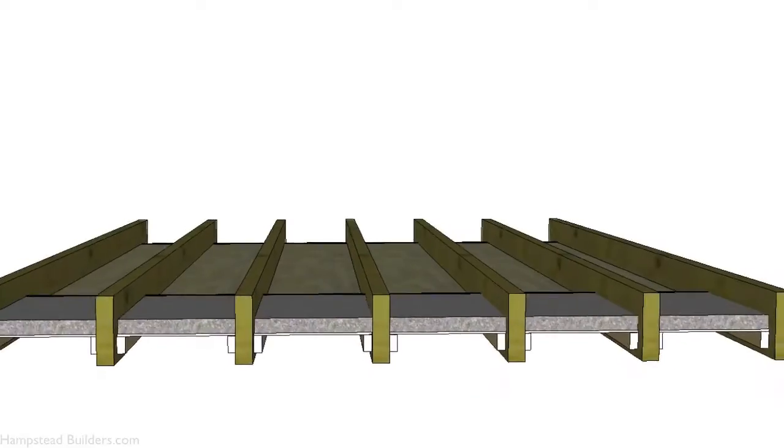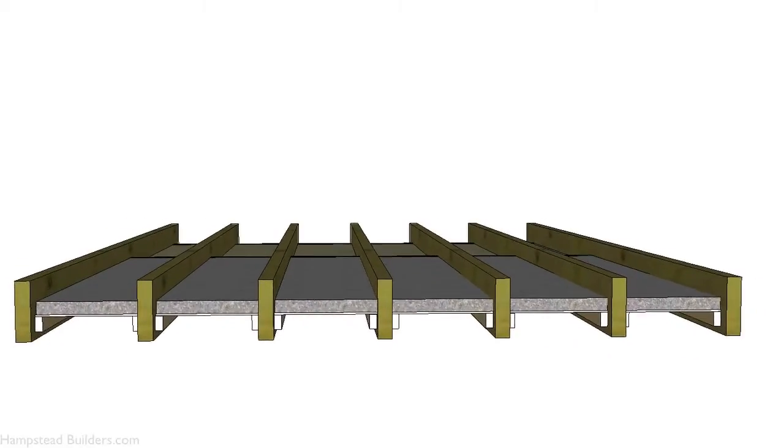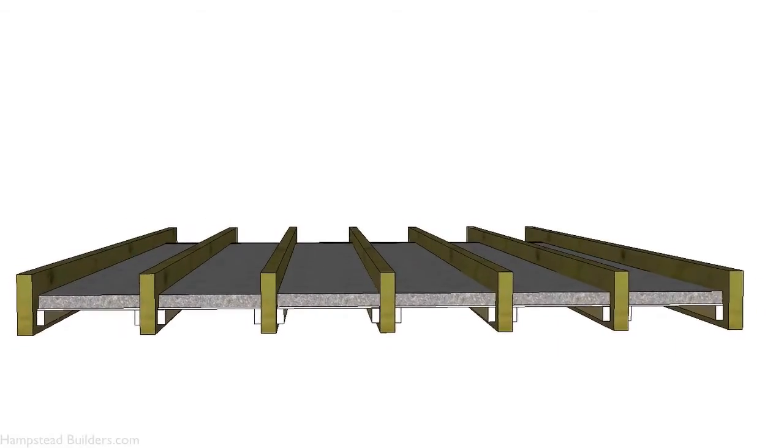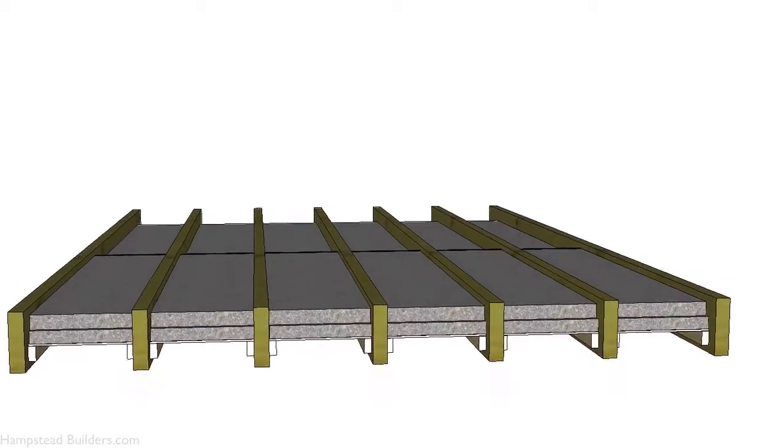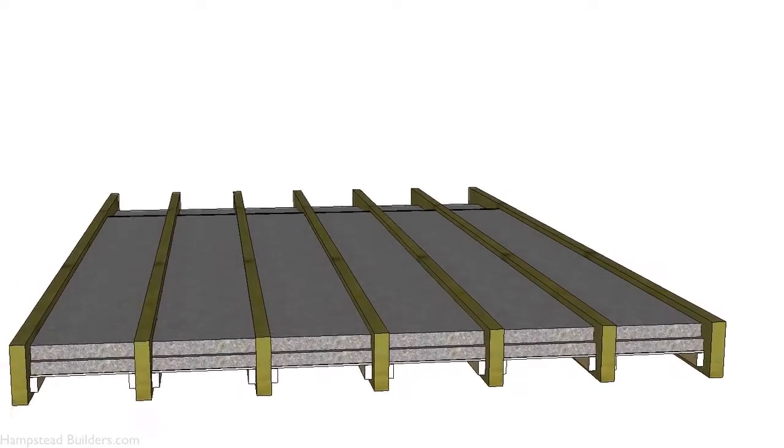You can see the joists in front of you with some battens either side, and then on top of this we're putting ply, and then on top of that we're putting two layers of soundproof insulation.